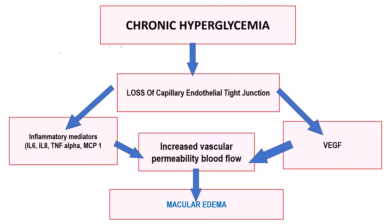If you have seen my video on the pathophysiology of diabetic retinopathy, you would understand that chronic hyperglycemia will cause a breakdown of the blood-retinal barrier, and this happens because of two main reasons. Number one is the vascular endothelial growth factor, and the other reason is the inflammatory mediators — these could be interleukin-6, interleukin-7, tumor necrosis factor alpha, and MCP1. Because of these two factors — the inflammatory arm and the angiogenic arm — there will be increased vascular permeability, leading to macular edema.